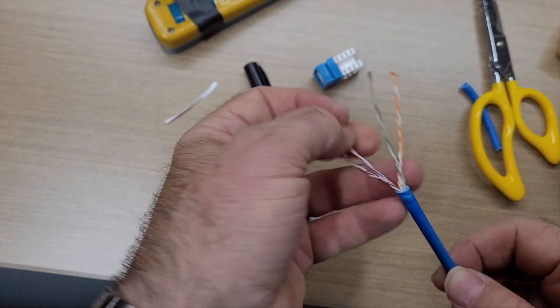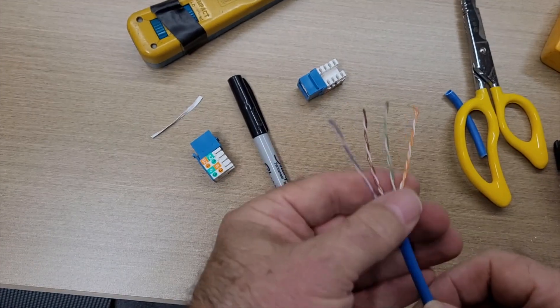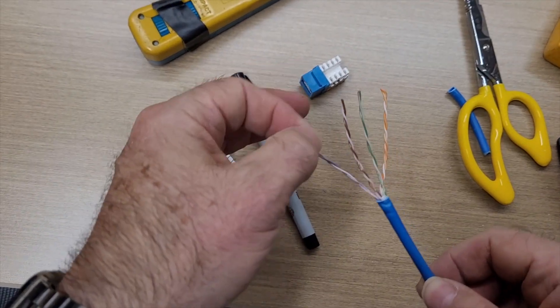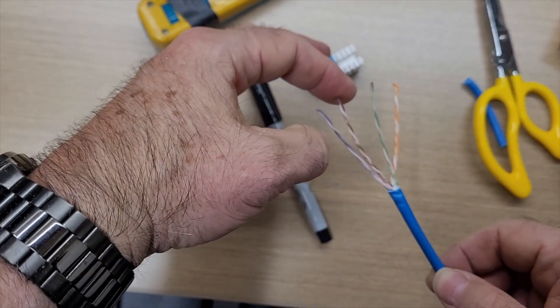So now all we're left with is the wires. The way this works is the wires are color-coded. There's a blue pair, an orange pair, a green pair, and a brown pair.